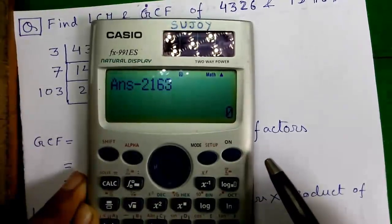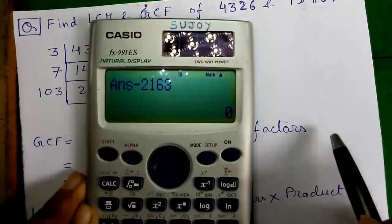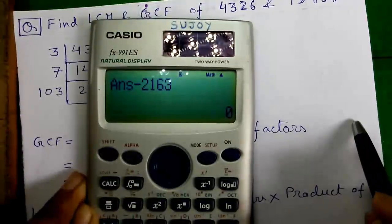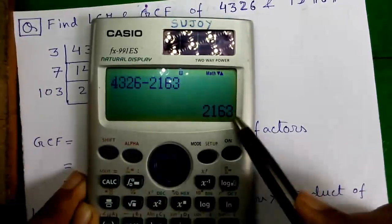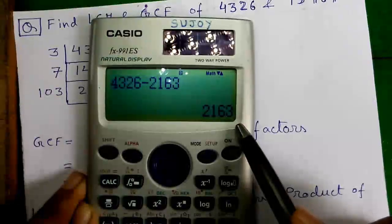If you get a minus sign, as mentioned earlier, interchange the values and continue the operation until you get a zero. And when you get a zero, press the joystick up and notice the value. So this is our required GCF.